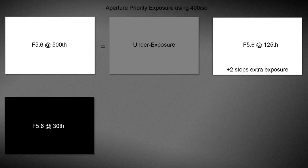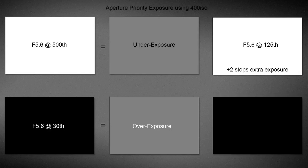Now let's take a look at the same thing with the black card, where the camera selected a 30th of a second as the shutter speed, remaining with an aperture of f5.6. And what do we get? We get the very same mid-grey we saw with the white card and also in our earlier video. The camera has seen a very dark subject — black — and it's used its 18% calibration once again to set the exposure. But the exposure is clearly wrong because the camera cannot tell the difference between black and white.